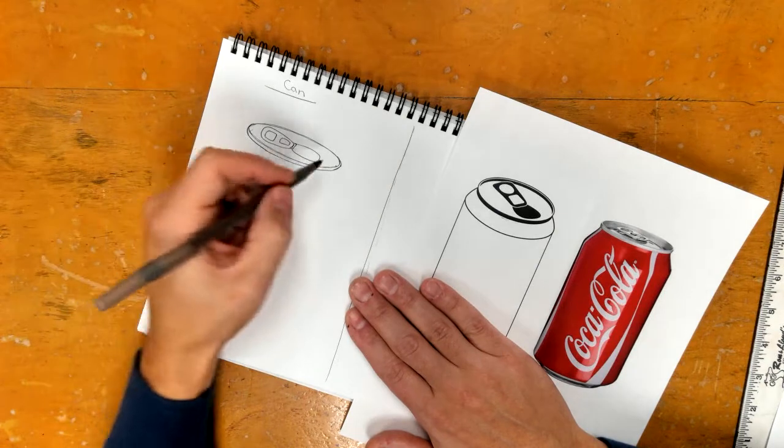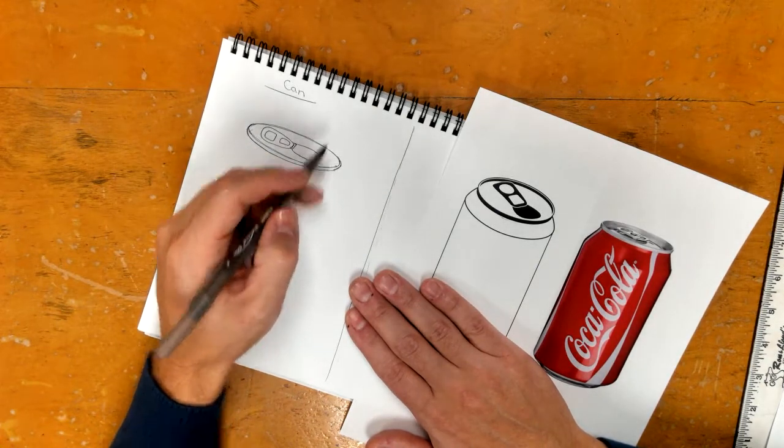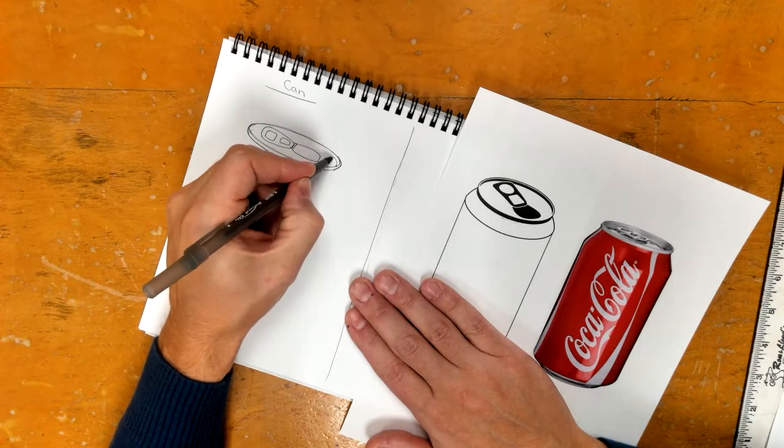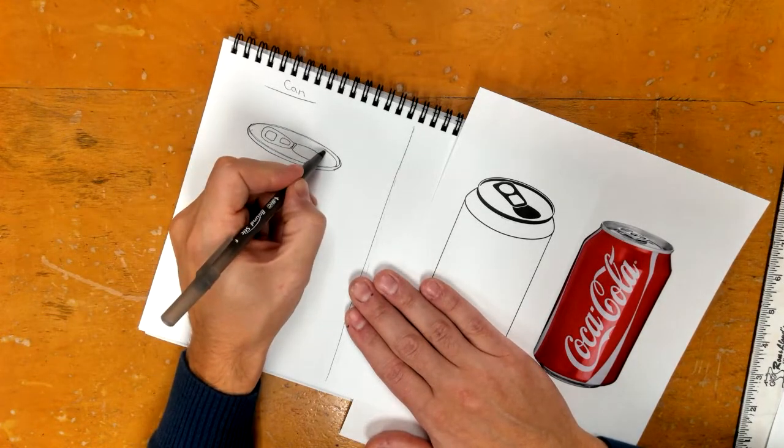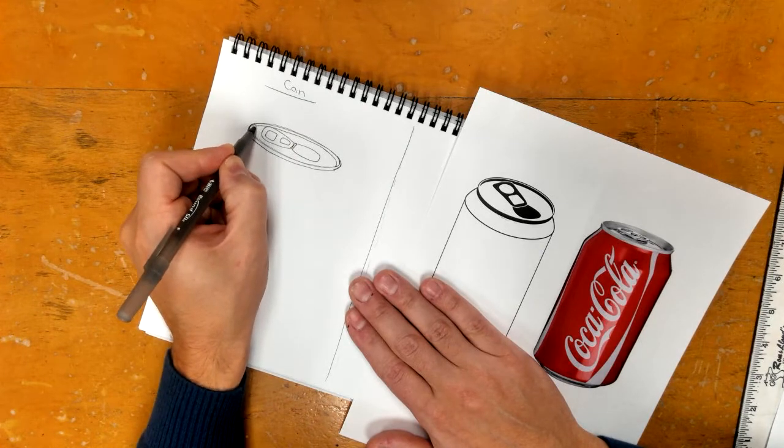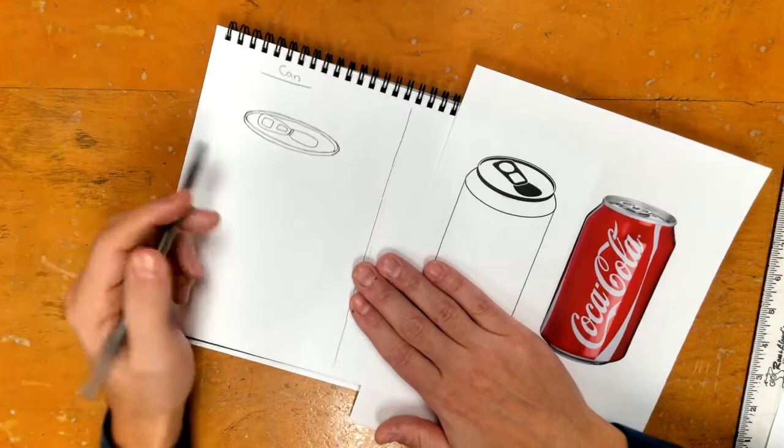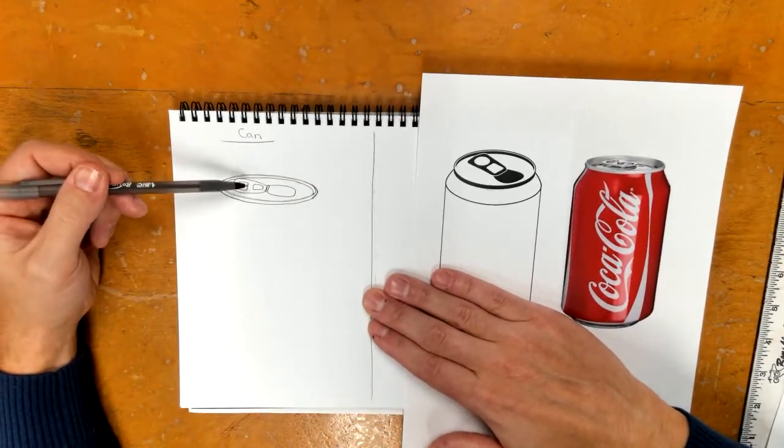Now on the back end, you'll notice this line started here and came around. We're going to start the back end of this so now we can see the inside of the can. That's going to come around to here. So now we have the top lid.